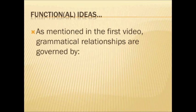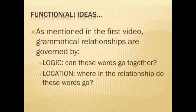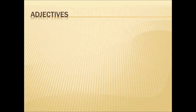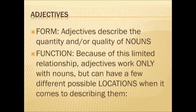As mentioned in the first video, grammatical relationships are governed by logic. So again, thinking about whether these particular words can go together. We also discussed location — where in the relationship do these words go? For example, in talking about adjectives, the basic idea is that they describe the quantity and/or quality of nouns. Because of this limited relationship, adjectives work only with nouns, but can have a few different possible locations when it comes to describing them.